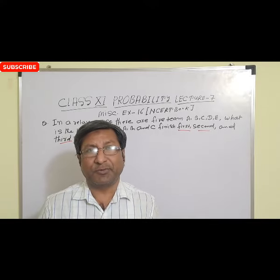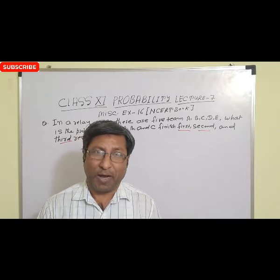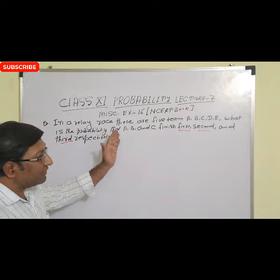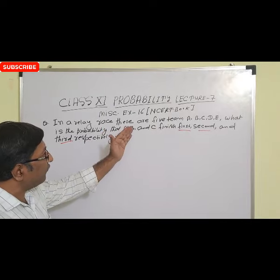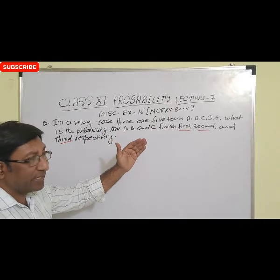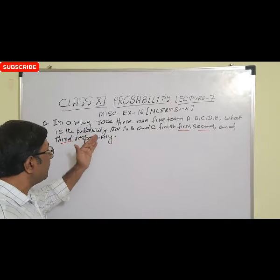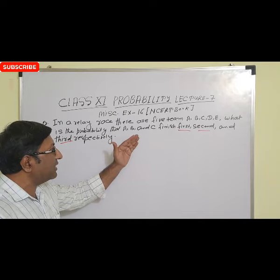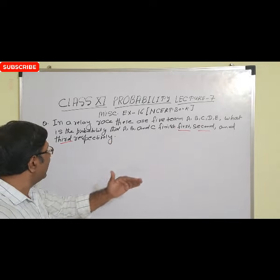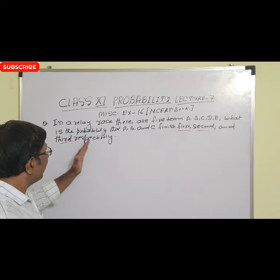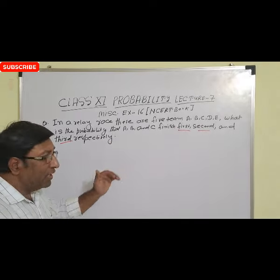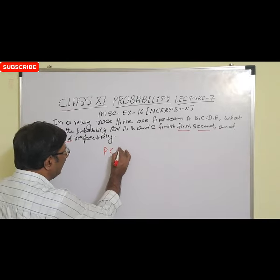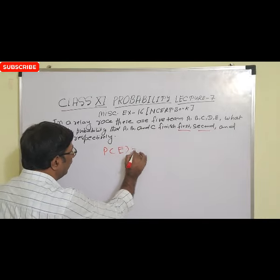Most important question of probability. Let us see the question. In a relay race there are 5 teams A, B, C, D. What is the probability that A, B and C finish 1st, 2nd and 3rd respectively? So we know probability of any event equal to what?